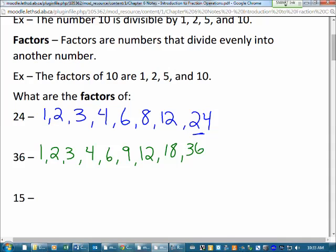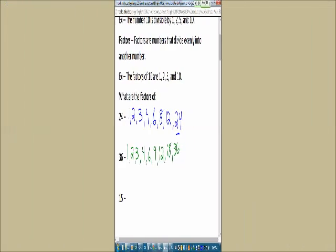Now, to use the word divisible, we would say 24 is divisible by 1, 2, 3, 4, 6, 8, 12, and 24. 36 is divisible by 1, 2, 3, 4, 6, 9, 12, 18, and 36. And that's how we'd use those words.